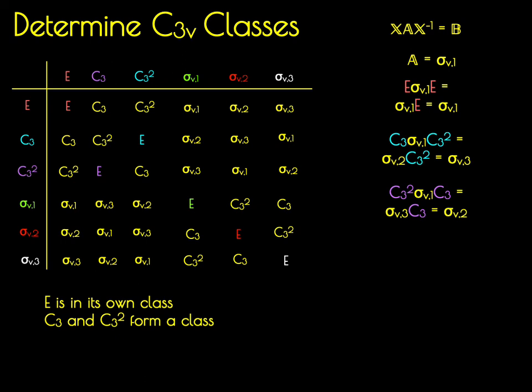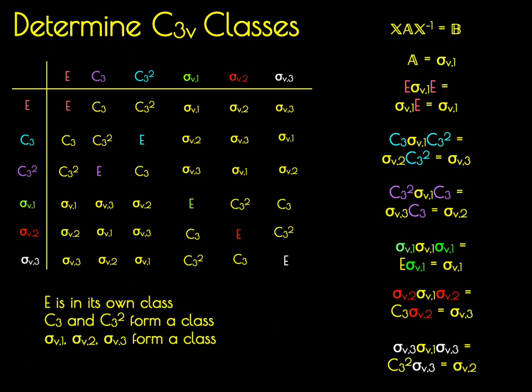Similarity transform of sigma V1 by sigma V2 is sigma V3. And the similarity transform of sigma V1 by sigma V3 is sigma V2. So we've shown that sigma V1, sigma V2, and sigma V3 are all conjugate elements and they form a class.